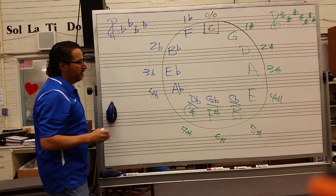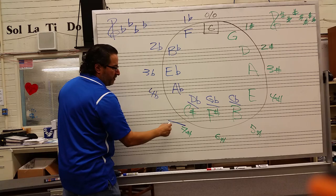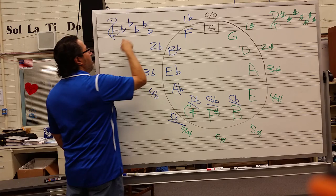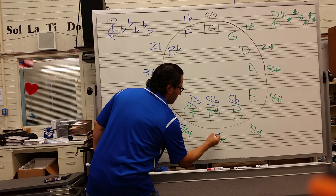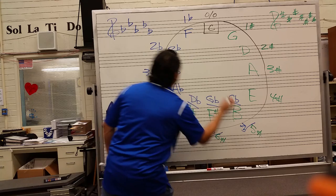The key of D flat has five flats: B flat, E flat, A flat, D flat, and G flat. When we get to G flat, we've got six flats. When we get to C flat, we've got seven flats. And then we stop at seven.